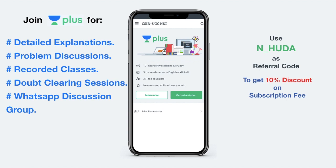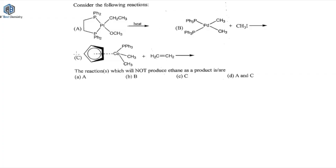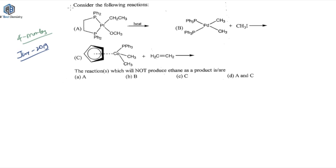Now that's all about Unacademy Plus. Let's continue with our video. So hello everyone and welcome to the channel. This video is going to be about questions which were asked from the inorganic reaction mechanism part. This question was asked for four marks in your CSIR June 2019 exam, and it says: consider the following reactions.